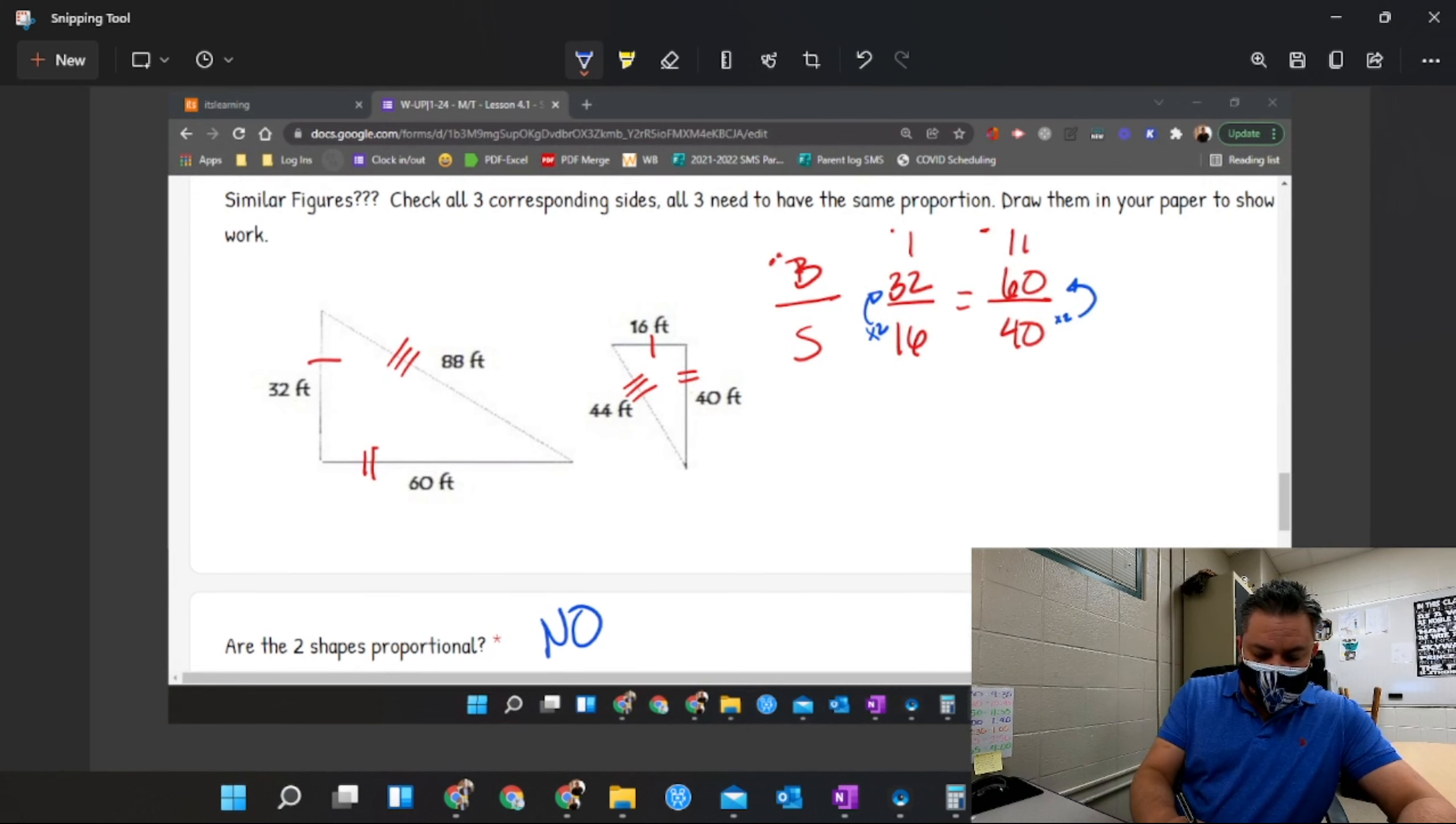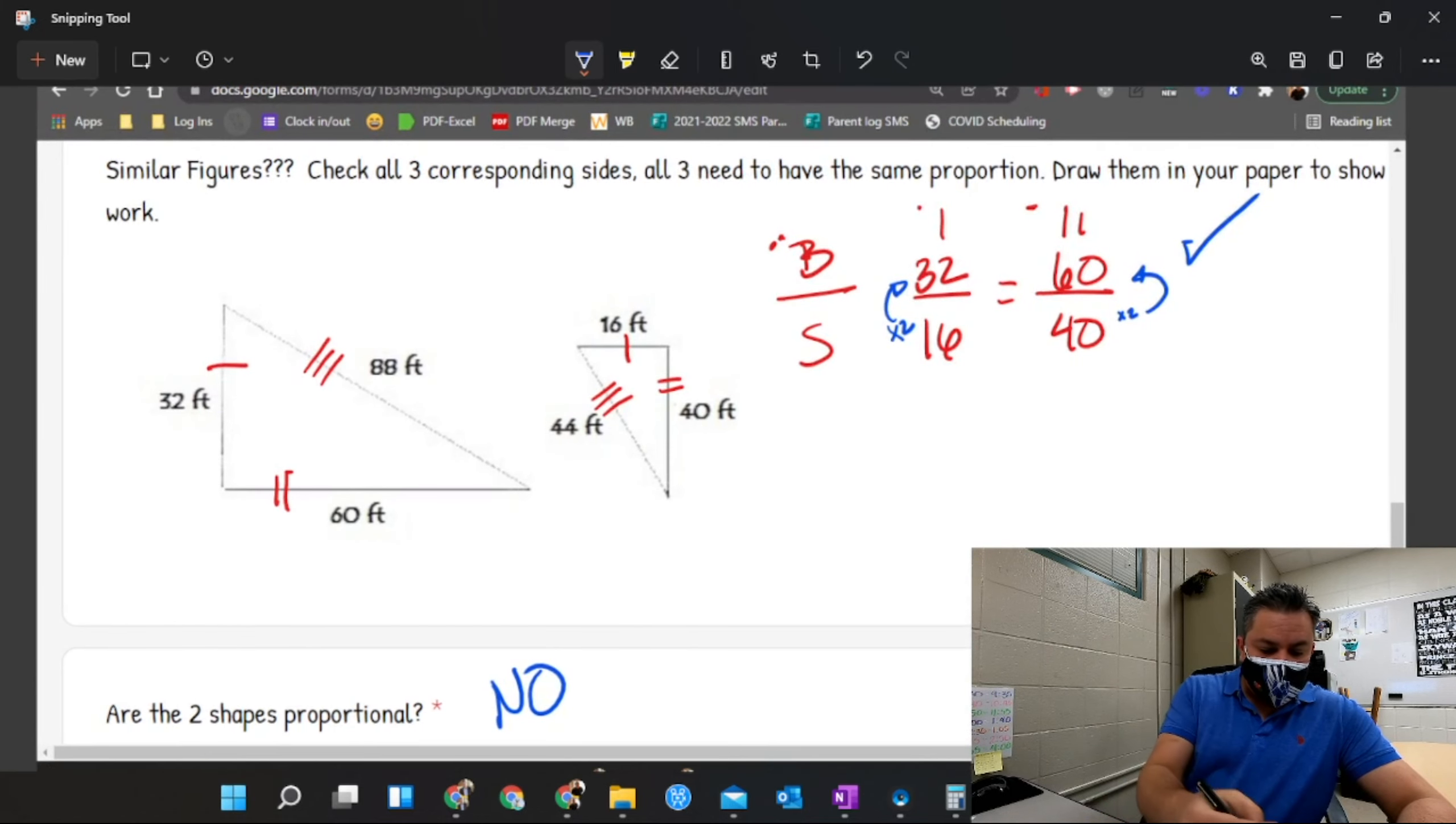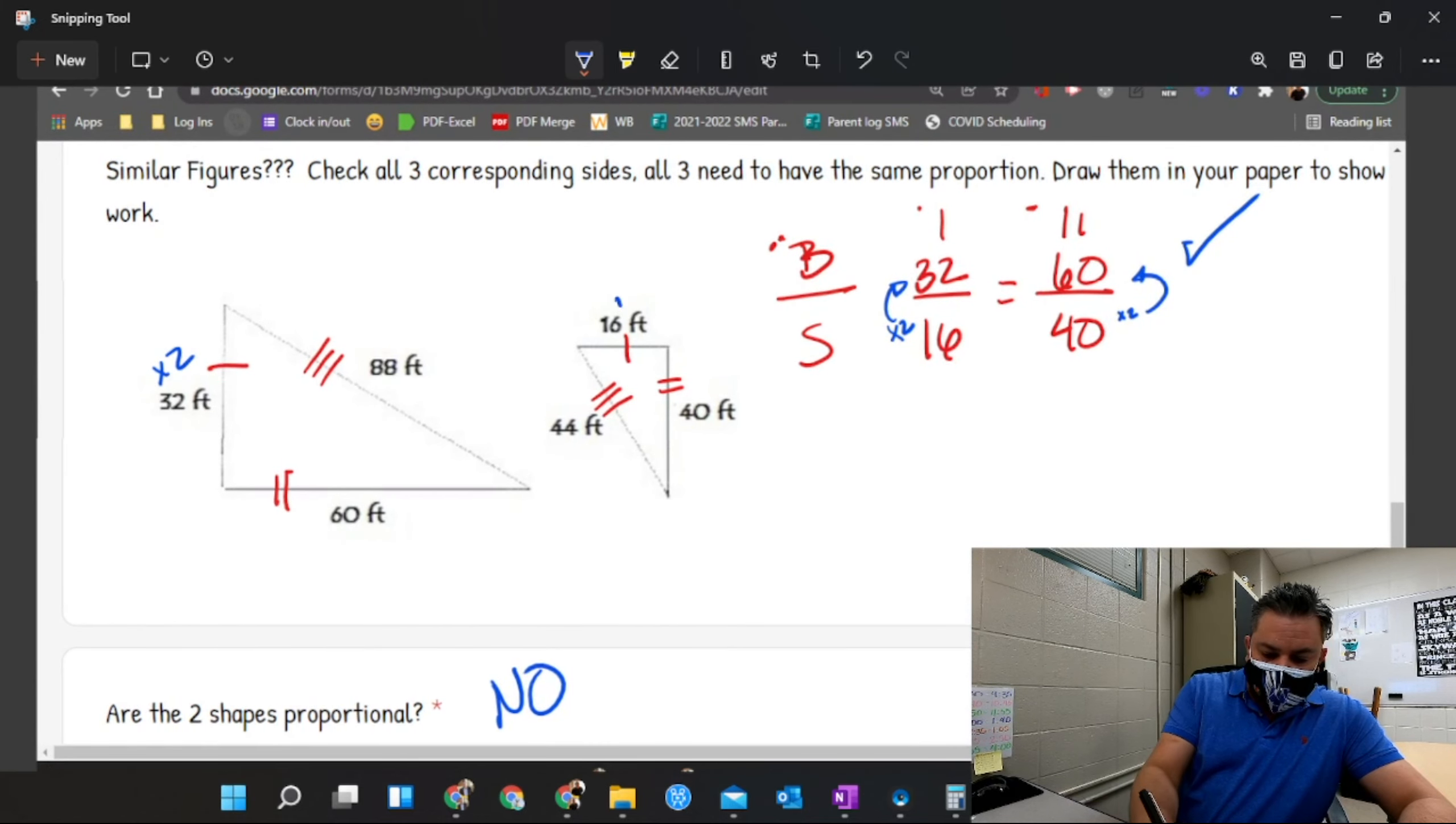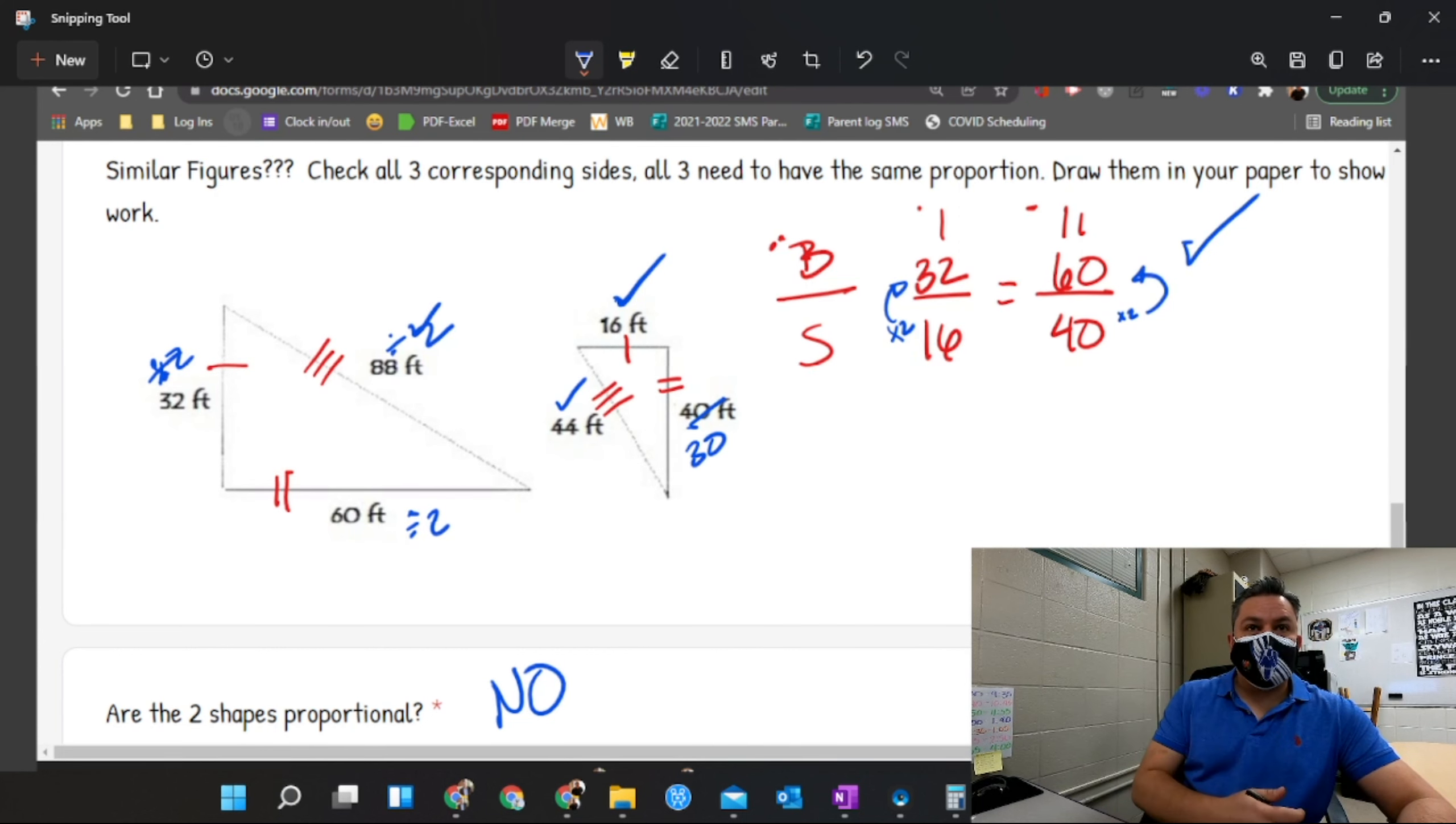And this is part of your work. Now in this case, I didn't even have to do the last one, but look what happened. This times two gives me 32. This divided by two gives me 16, right? This divided by two gives me 44, right? But this divided by two should have given me not 40 but what? 30. So that's why they're not proportional.